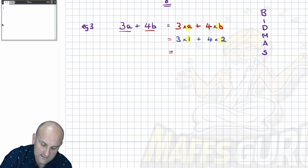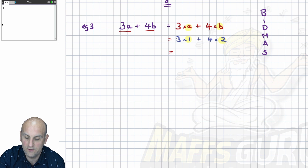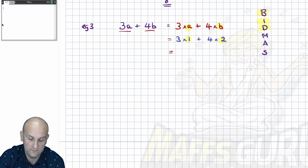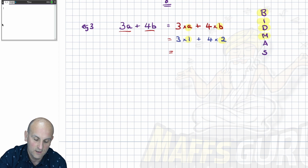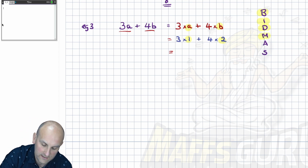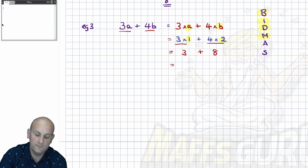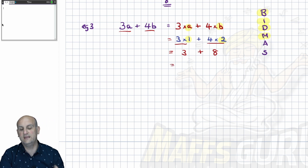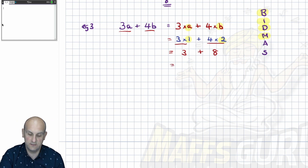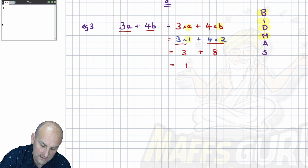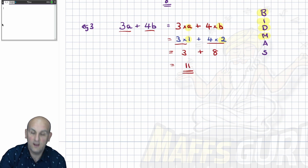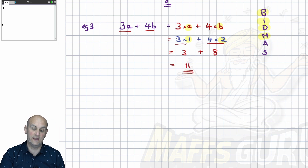So 3 times 1 plus 4 times 2. Now remember BIDMAS — are there brackets? No. Indices? No. Division? No. Multiplication? Yes — so I have to do the multiplication first. 3 times 1 is 3, and 4 times 2 is 8. Then start BIDMAS again — there is addition: 3 plus 8 is 11. And ladies and gentlemen, I have just evaluated that expression.